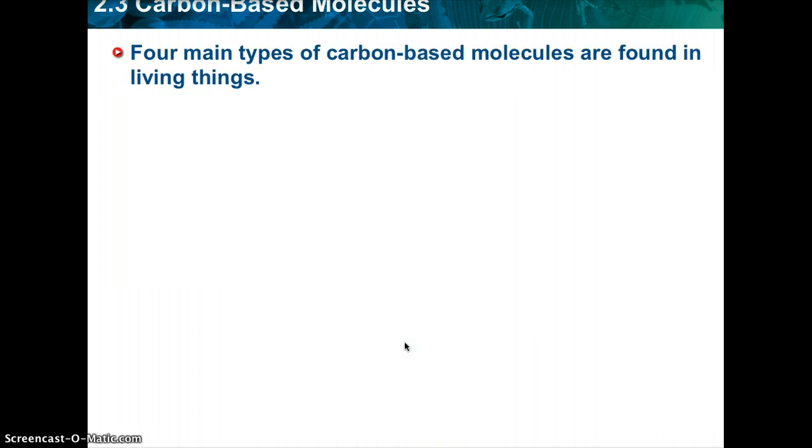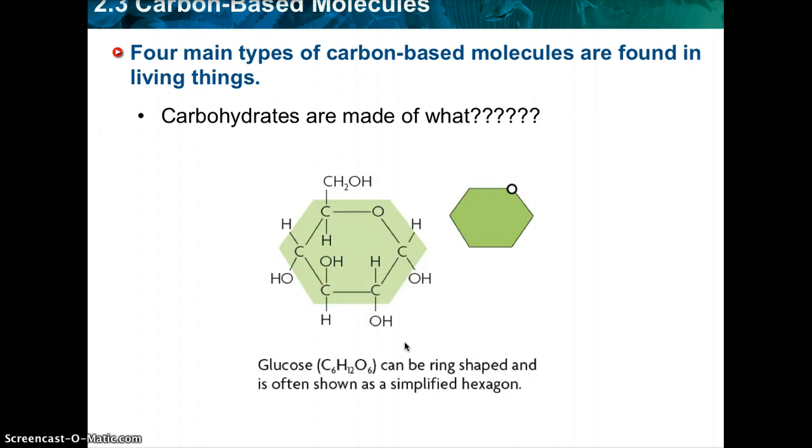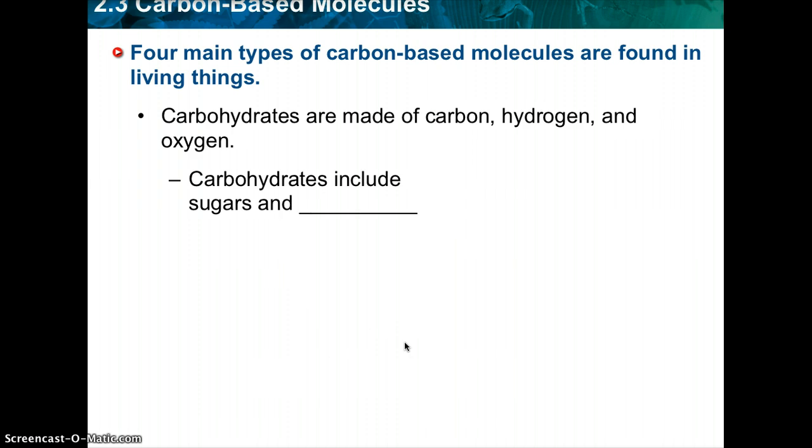There are four main types of carbon-based molecules that are found in living things. Carbohydrates is one of the major ones, which is made up of carbon, hydrogen, and oxygen. Here's a picture of glucose, which is ring-shaped. And carbohydrates include sugars and starches.